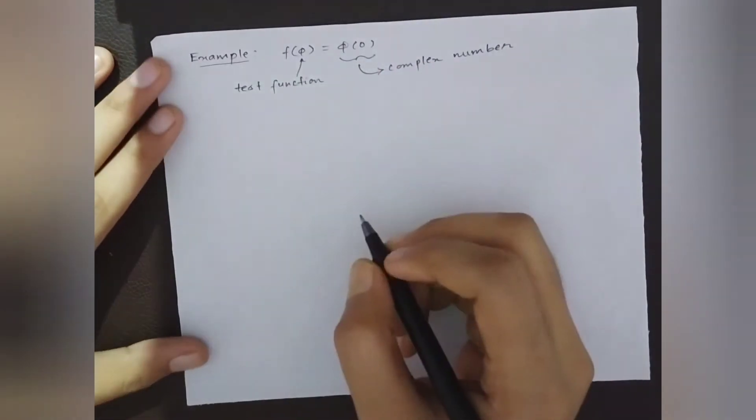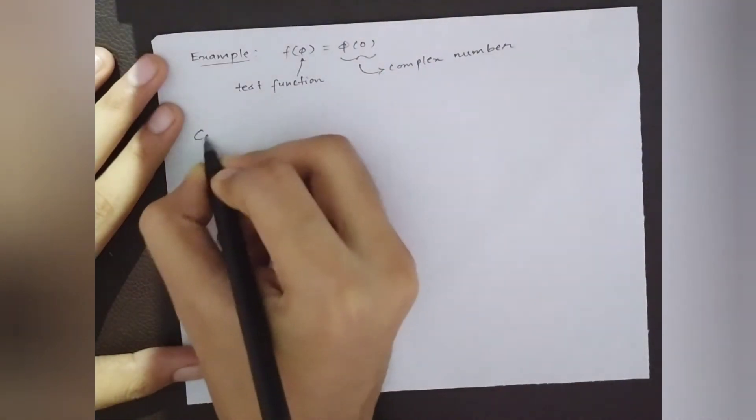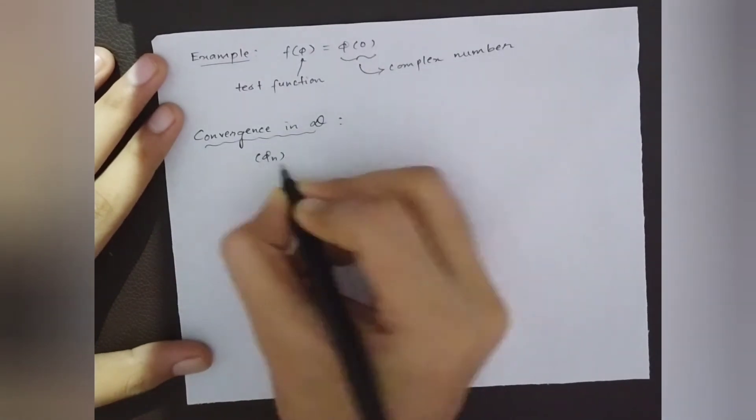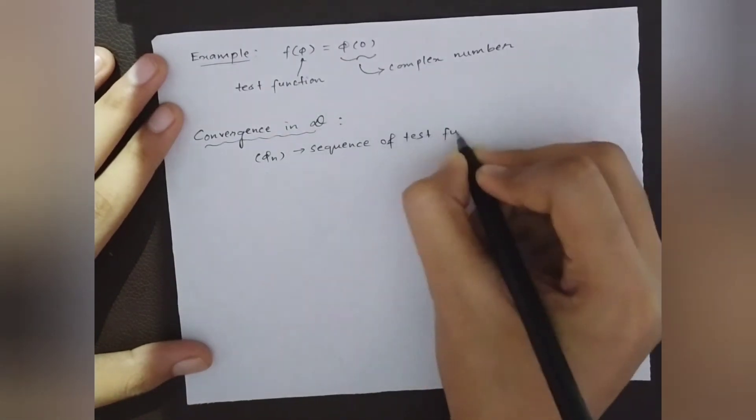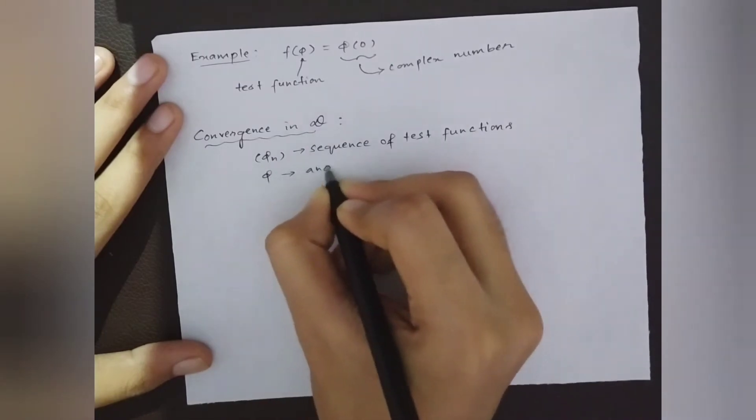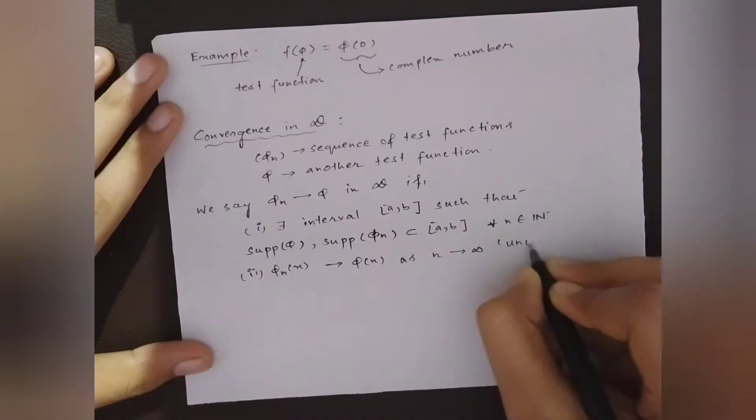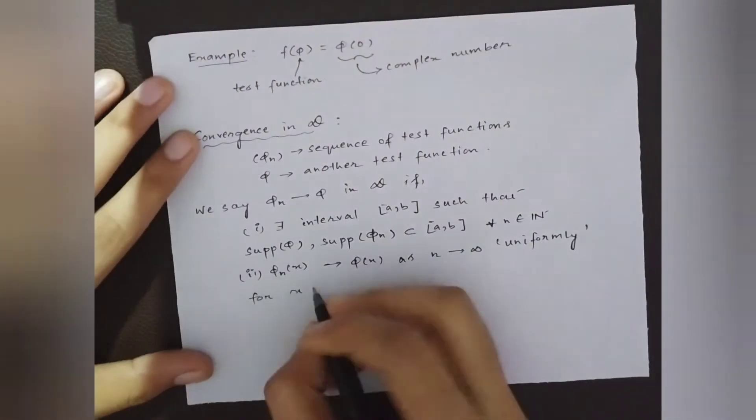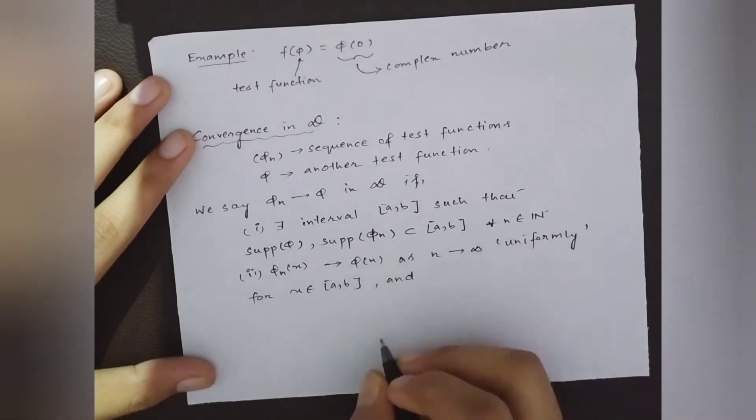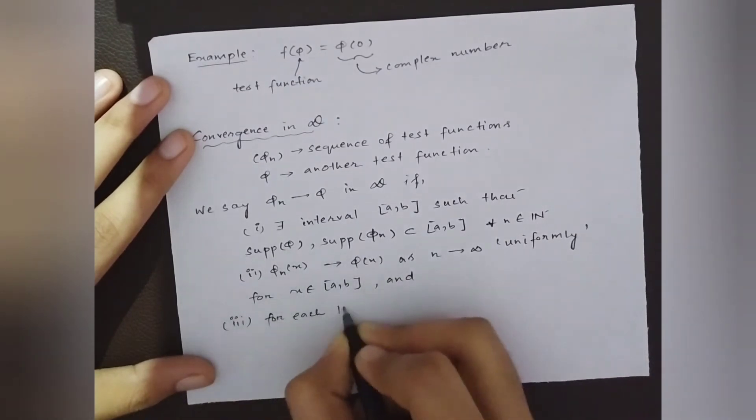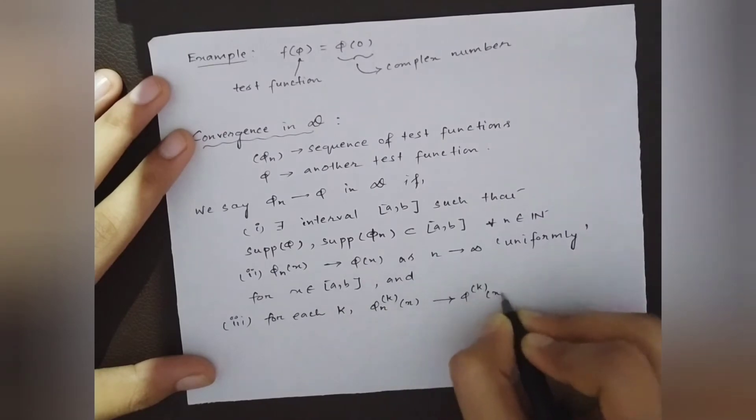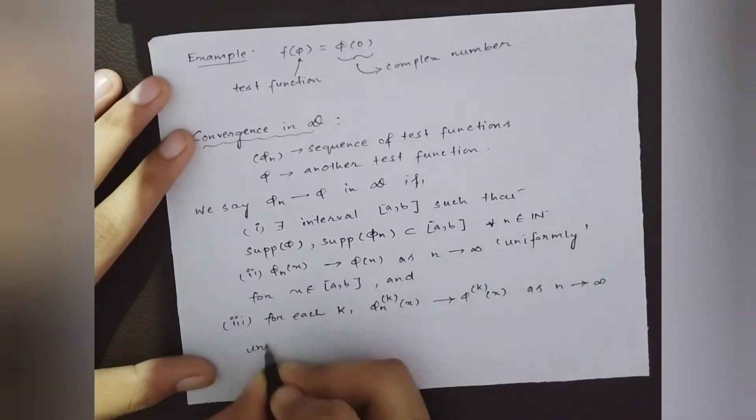Our last piece for the definition of distribution is the notion of convergence in D. We say that the sequence of test functions φ_n converges to φ in D if three conditions hold: there must exist a compact set such that the support of all test functions are a subset of it, and the sequence of test functions and its derivatives must converge uniformly.